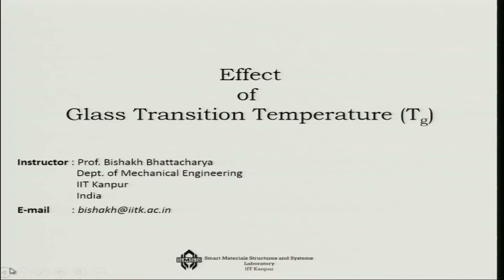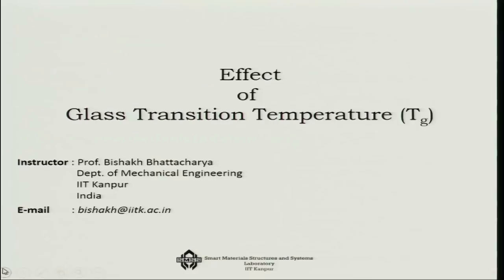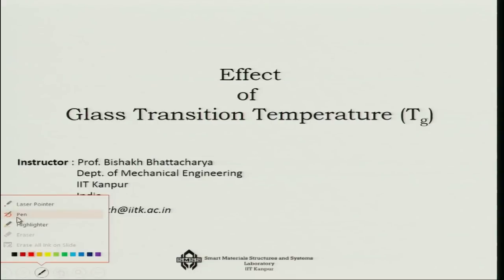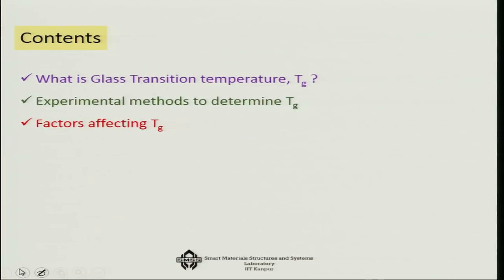In the last talk we discussed crystallinity and the amorphous nature of a polymer. Interestingly, with respect to temperature, a polymer can actually change its physical properties in a very drastic manner, not unlike many other solids. That important temperature is known as the glass transition temperature of a polymer. We are going to talk about what is the glass transition temperature, the experimental methods to determine Tg, and the factors that affect it.